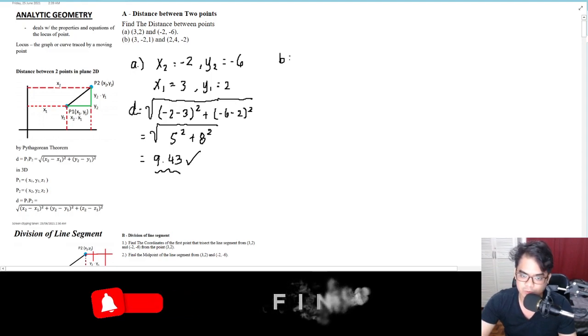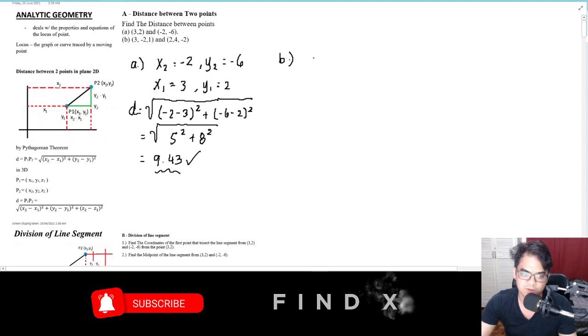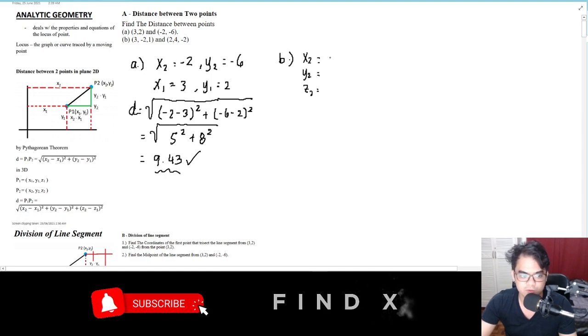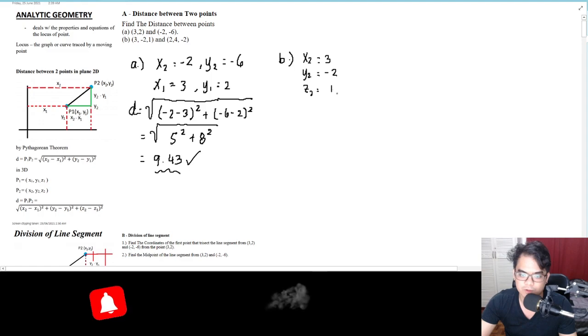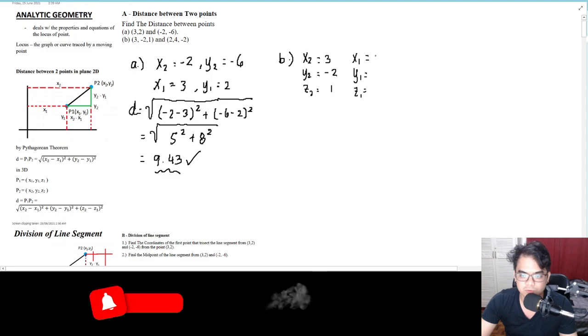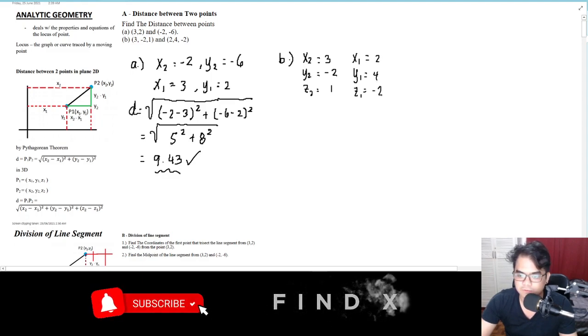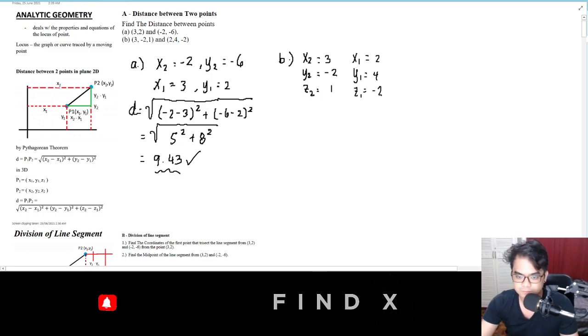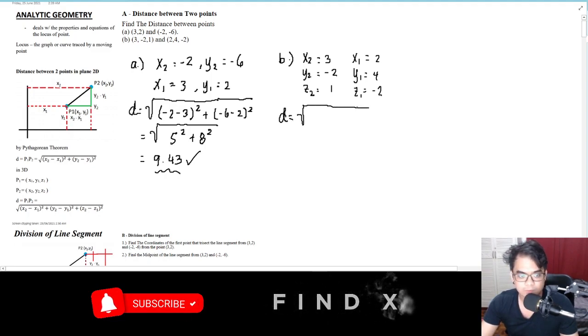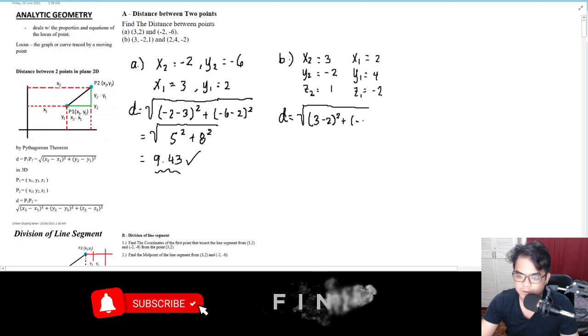Let's move on to the next one. The next one will now be 3D, so it will just be the same. We'll have x2, y2, and z2. This will be the first coordinate, so that is (3, -2, 1), and then we also have (x1, y1, z1), which is (2, 4, -2). To apply the formula in 3D, this will become square root of (3 - 2)² plus (-2 - 4)² plus...